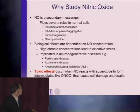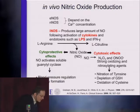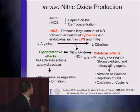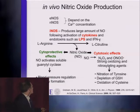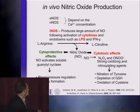Nitric oxide has been implicated in a variety of neurodegenerative diseases such as Parkinson's, Alzheimer's, and ALS. Toxic effects occur when nitric oxide reacts with superoxide to form intermediates like peroxynitrate that cause cell damage and death. There are three different isoforms of nitric oxide synthase that produce NO. We're particularly interested in iNOS, which can produce a large amount of NO following activation by cytokines and endotoxins such as lipopolysaccharide and interferon gamma.